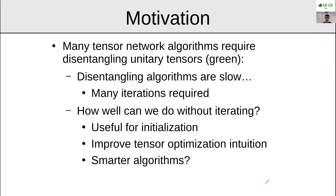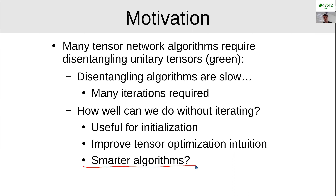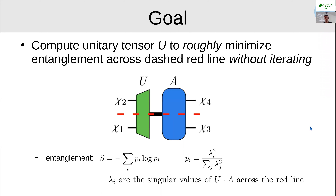My motivation is: can we try to do some sort of tensor disentangling without having to do any iterations? Is there a one-shot method that can approximately disentangle a tensor relatively well? This could be useful for initializing tensors in a tensor network and could improve our intuition for how we want to optimize tensors.